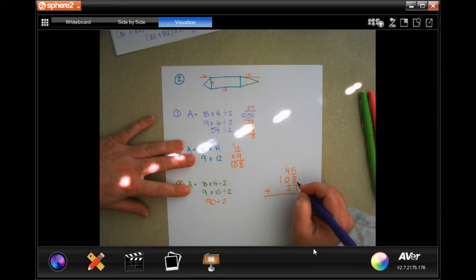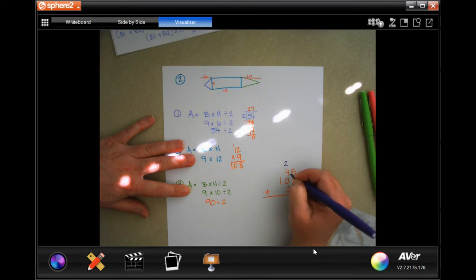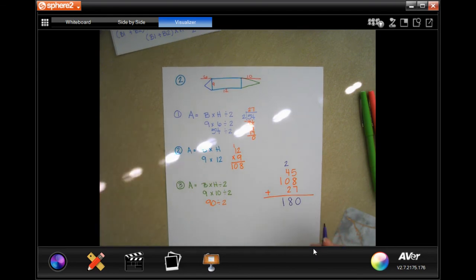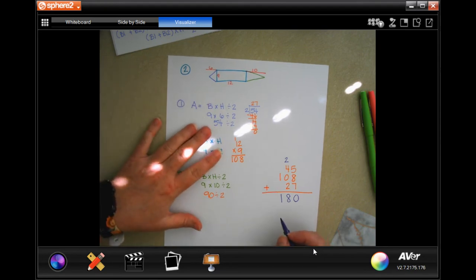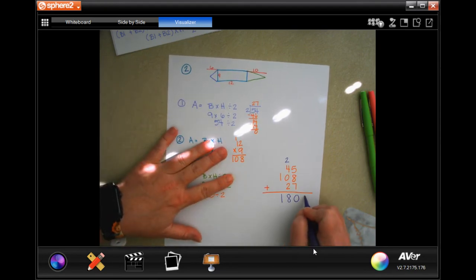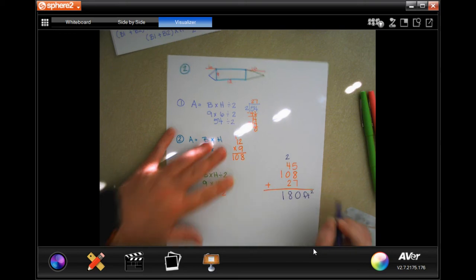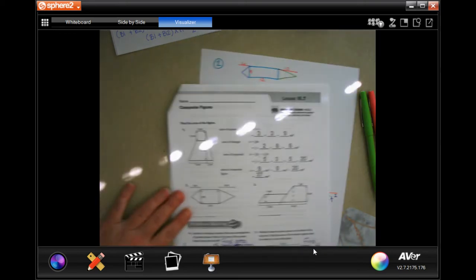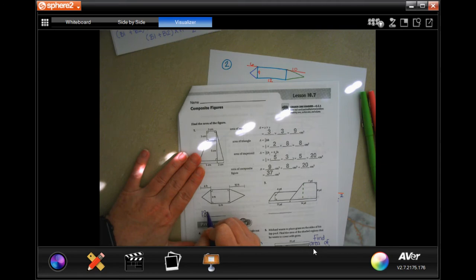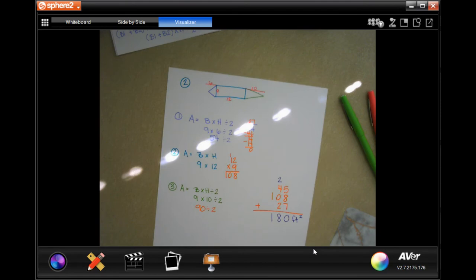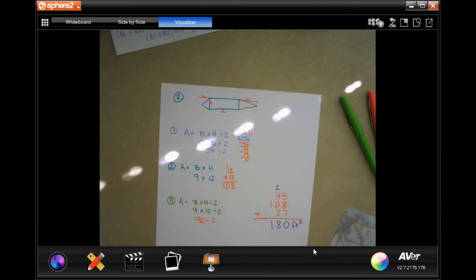Now I just need to add those up. 5 plus 8 is 13 plus 7 is 20, carry our 2. 2 plus 4 is 6 plus 2 more is 8, and then I'm going to bring down my 1. That is 180, and it's being measured in feet. We multiply feet by feet every time, so we get 180 feet squared. Pause and write down your work, you have to show your work, guys.